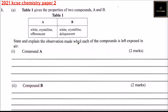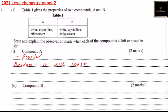State and explain the observation made when each compound is left exposed in air. Looking at Compound A, it is efflorescent. Efflorescent means when left in the air, it will lose its water of crystallization. The observation is that it will form a powder, because it loses water of crystallization when left exposed to the air.